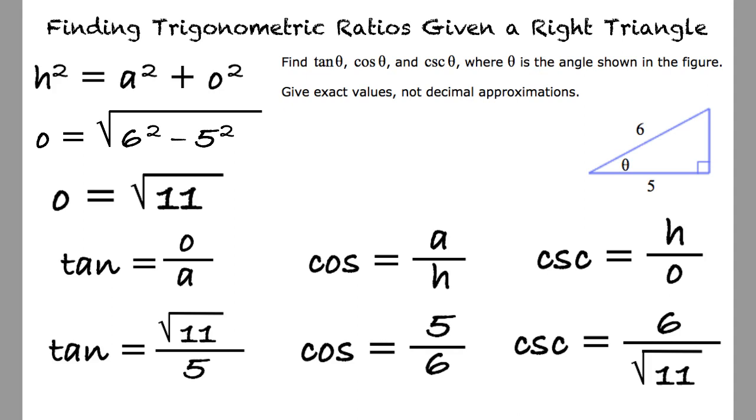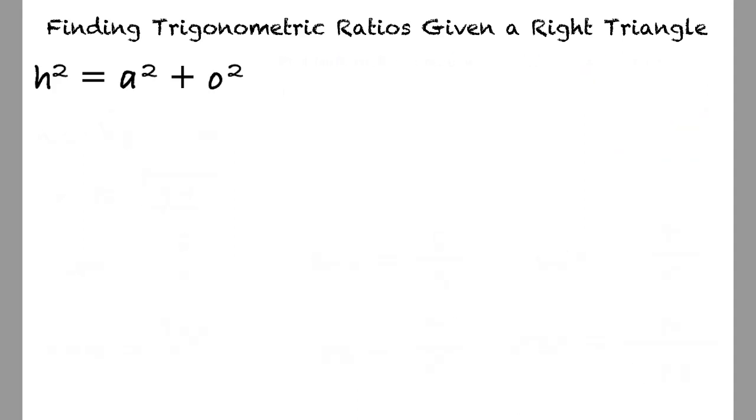I think I understand this topic now, but let me quickly summarize just to be sure. We begin by using the Pythagorean theorem to solve for the length of the missing side. Next, we substitute the appropriate side lengths to solve for the given trigonometric ratios. That's right. Thank you.